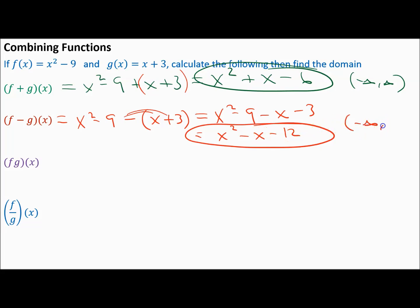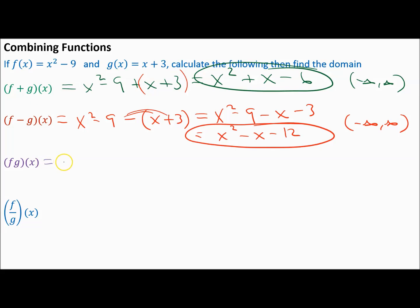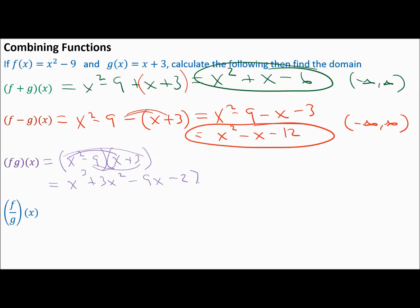For multiplication, F of X times G of X: write (x squared minus 9)(x plus 3) and FOIL. x squared times x is x to the third; x squared times 3 is 3x squared; negative 9 times x is negative 9x; negative 9 times 3 is negative 27. No like terms to combine, so the answer is x cubed plus 3x squared minus 9x minus 27. Domain: negative infinity to infinity.